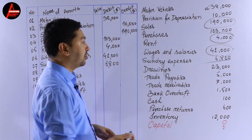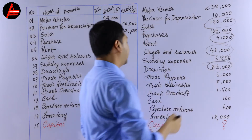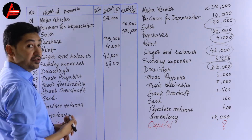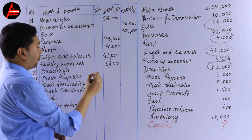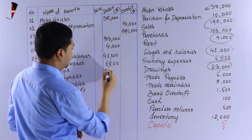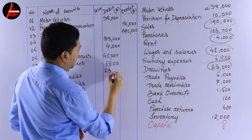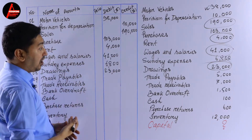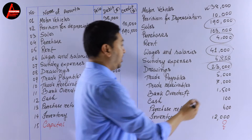Next we have drawings. This is another type of expense, so it is also debited. Drawings: 23,000 dollars on the debit side.